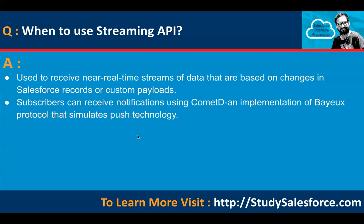When to use Streaming API: it is used to retrieve near real-time streams of data based on changes in Salesforce records or custom payloads. Subscribers can receive notifications using a CometD implementation of the Bayeux protocol that simulates push technology.